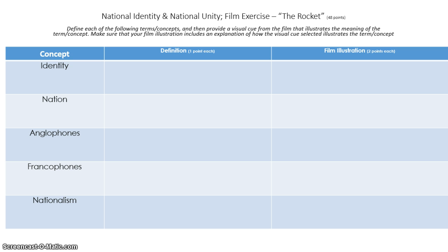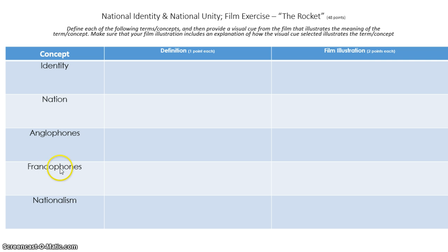Here are the first five terms. The first two — identity and nation — are concepts from the first related issue. The next two — anglophones and francophones — are concepts found in both the first related issue and the fourth related issue. Nationalism is also a term that goes back to the first related issue.